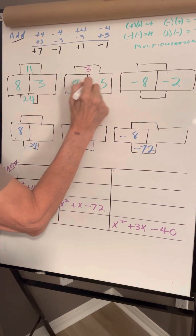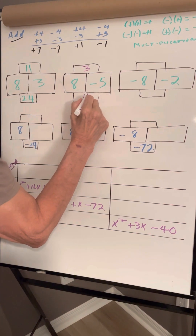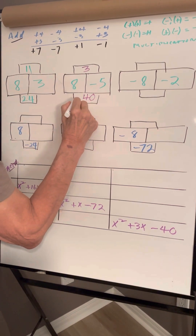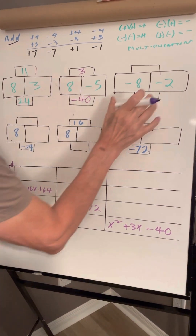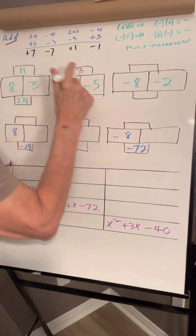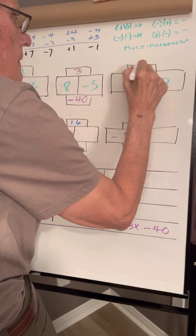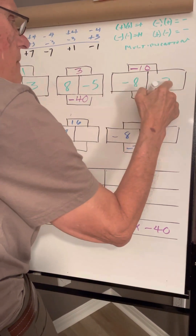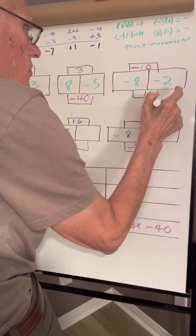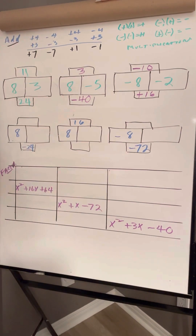3 and 8 times 5 is 40. C1 negative, keep it. 2 negatives, add. Negative 10. 8 times 2 is 16. 2 negatives — one goes this way, one goes that way.